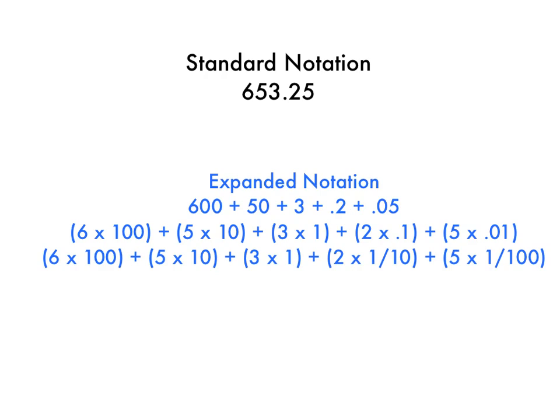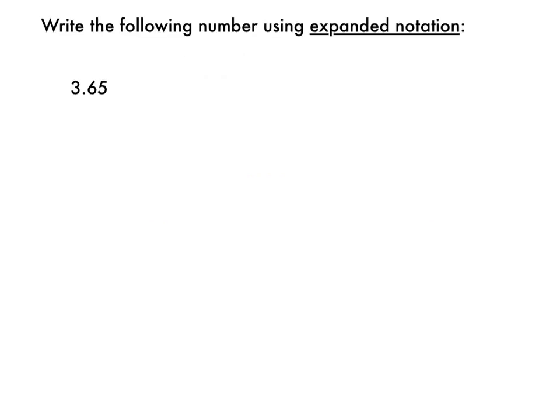We'll be practicing all these different forms. Let's write the following number using expanded notation. This number is 3 and 65 hundredths. So one way that I could record that in expanded notation is I have 3 plus I have 6 tenths plus I have 5 hundredths.